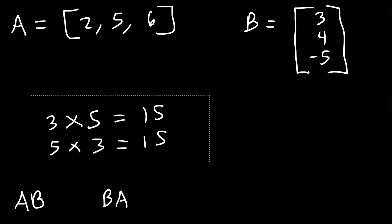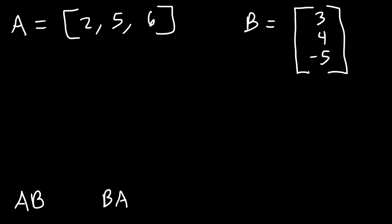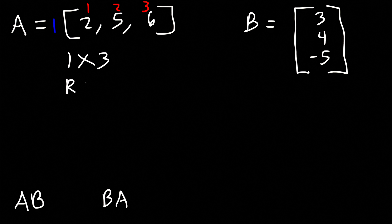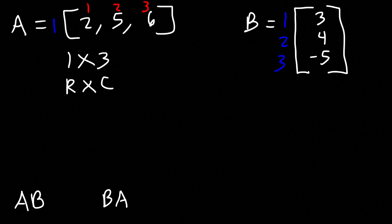Before we begin multiplying, let's talk about the order of each matrix. Matrix A has one row and three columns, so it's a 1 by 3 matrix. The way you write the order is rows first, then columns. Matrix B has three rows and only one column, so it's a 3 by 1 matrix.